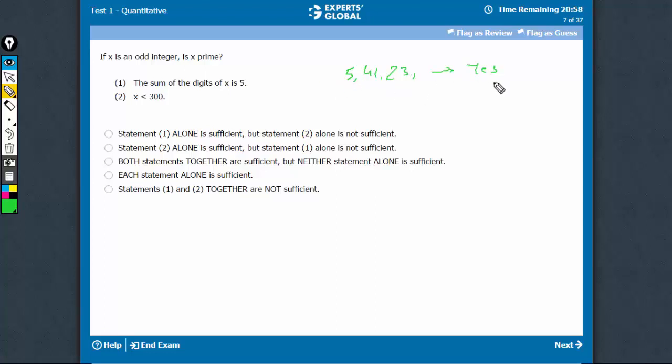Many more cases the answer would be yes, x is prime. In a peculiar case, 221, the answer becomes no. The sum is 5, the number is odd, but still not a prime number because 221 is 17 times 13.